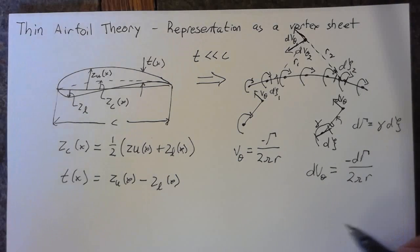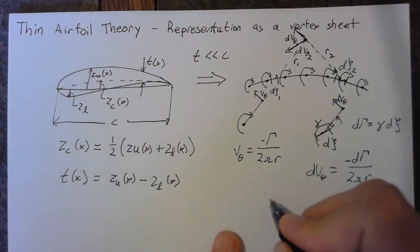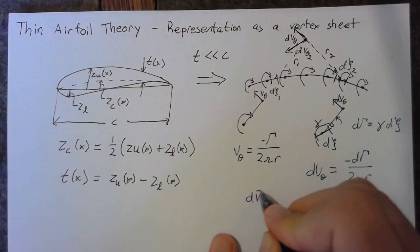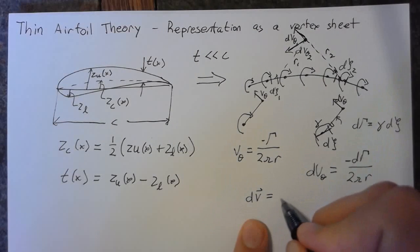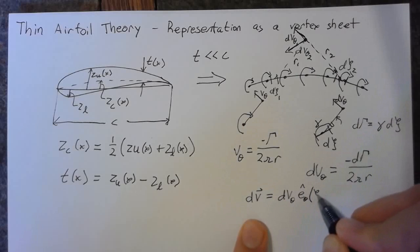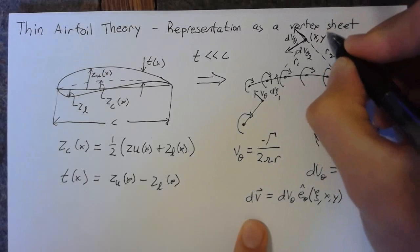So the way that we can see this is that our d v, if you want to put it in this way, is equal to our d v theta in the e theta direction, but now our e theta is a function of xi and x and y, where this point up here is going to be our x, y location.